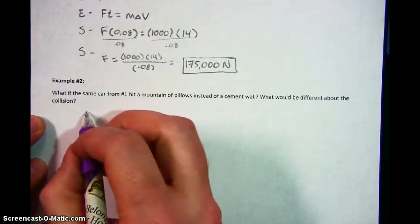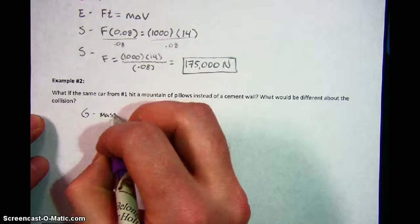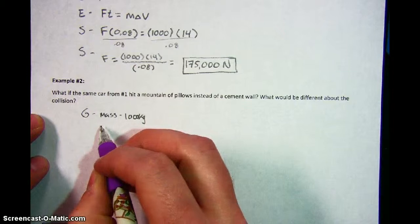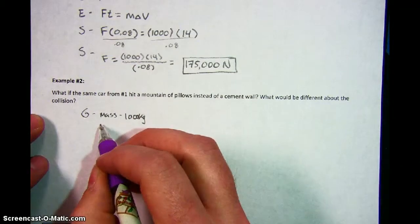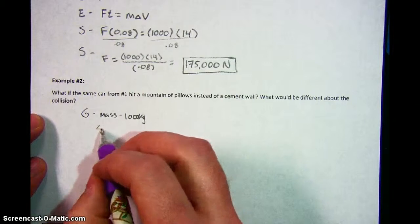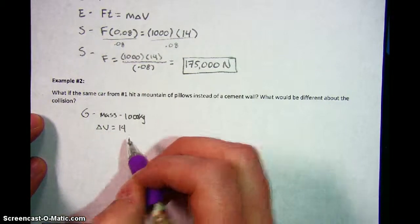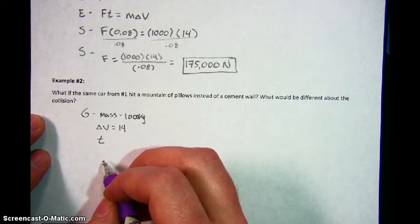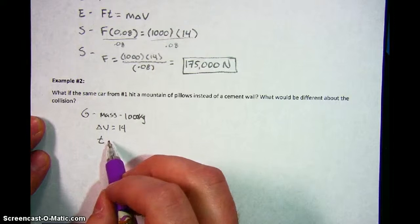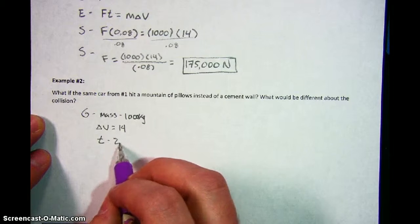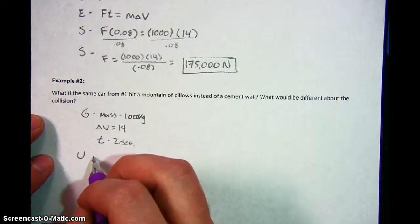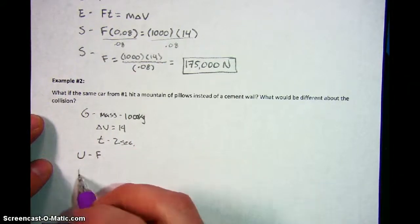Well, we're going to start this the same way with a given. The mass of the car is the same, so we're going to write that down, 1,000 kilograms. We also are going to assume that it's going to go at the same speed and it's going to also stop as a result of hitting this mountain of pillows. So the change in velocity is still 14. However, this time the time is going to be different. When you're crashing into a mountain of pillows, instead of an abrupt stop from hitting a cement wall, you're going to slow down over a much bigger period of time. Let's say for this mountain of pillows it takes 2 seconds to slow down.